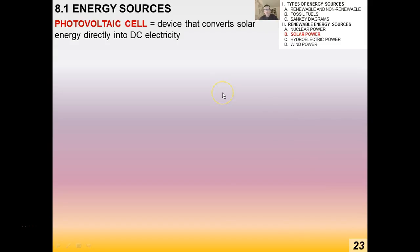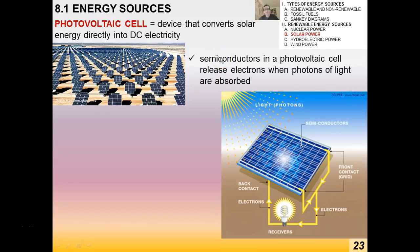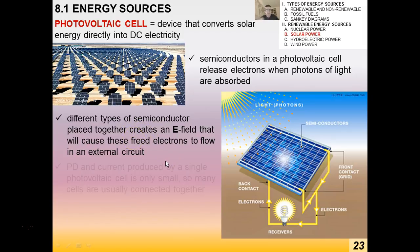The other solar device is the photovoltaic cell — the large bluish shiny panels you see on schools and businesses. These are semiconductors that release electrons when photons of light are absorbed. This creates an electric field causing free electrons to flow in an external circuit, creating electricity. The potential difference and current from a single cell is very small, so many must be connected together.